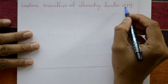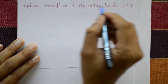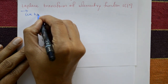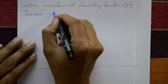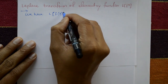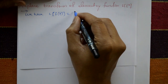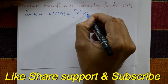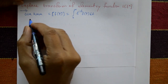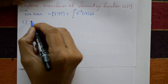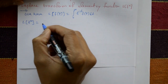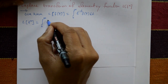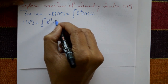Laplace transform of elementary function: L of t raised to n. By definition, the Laplace transform of f(t) is equal to the integration from 0 to infinity of e raised to minus st times f(t) dt. So the Laplace transform of t raised to n is the integration from 0 to infinity of e raised to minus st into t raised to n dt.